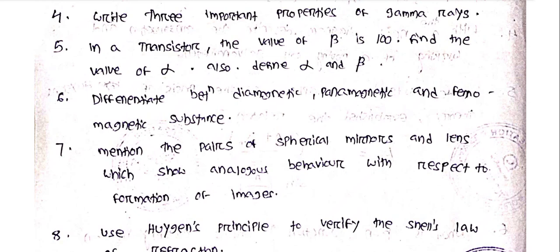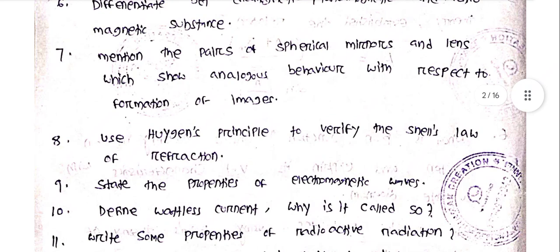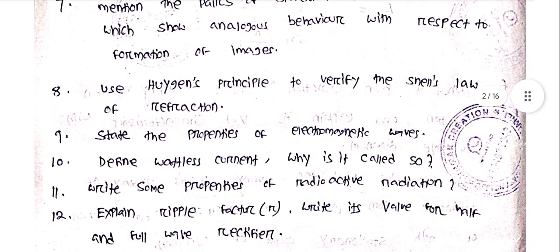Differentiate between diamagnetic, paramagnetic, and ferromagnetic substances. Mention the pairs of spherical mirrors and lenses which show analogous behavior with respect to formation of images. Use Huygens' principle to verify Snell's law of refraction. State the properties of electromagnetic waves — this question also comes in the exam.